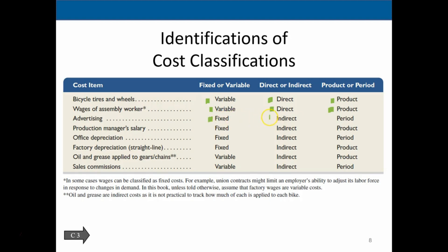Advertising is going to be fixed in this case — the same per year. It's indirect because we're not going to tie it directly to a specific department; it could affect multiple areas. And it's a period cost — we expense it when it is incurred, not tied to the production process. Production manager's salary is fixed because it's usually a salary regardless of how many bikes we make. It's indirect because it's not tied directly to the number of bikes made. And it's a product cost because the supervisor is in the production process, even though their salary does not change with the level of production.